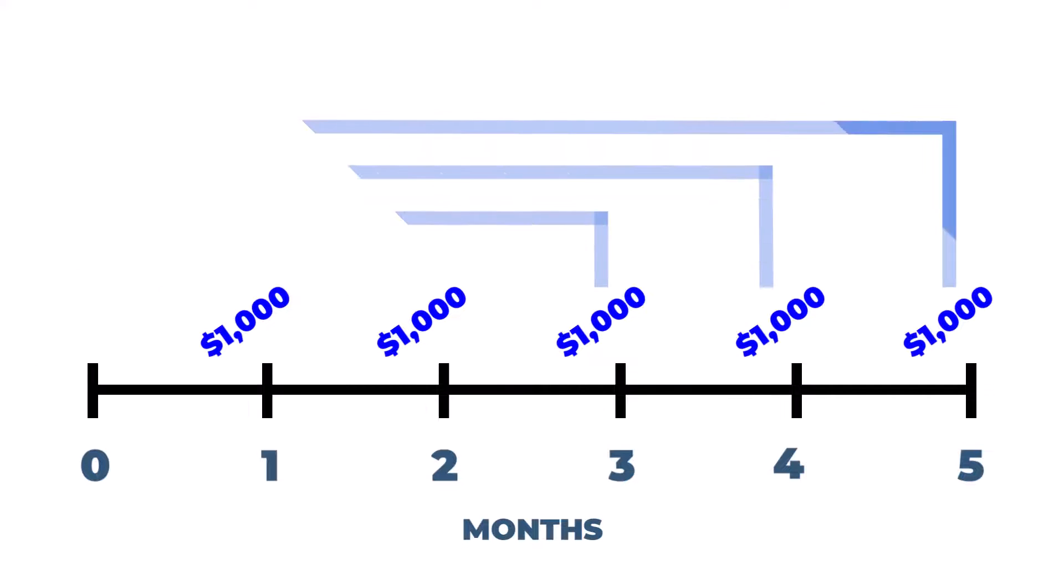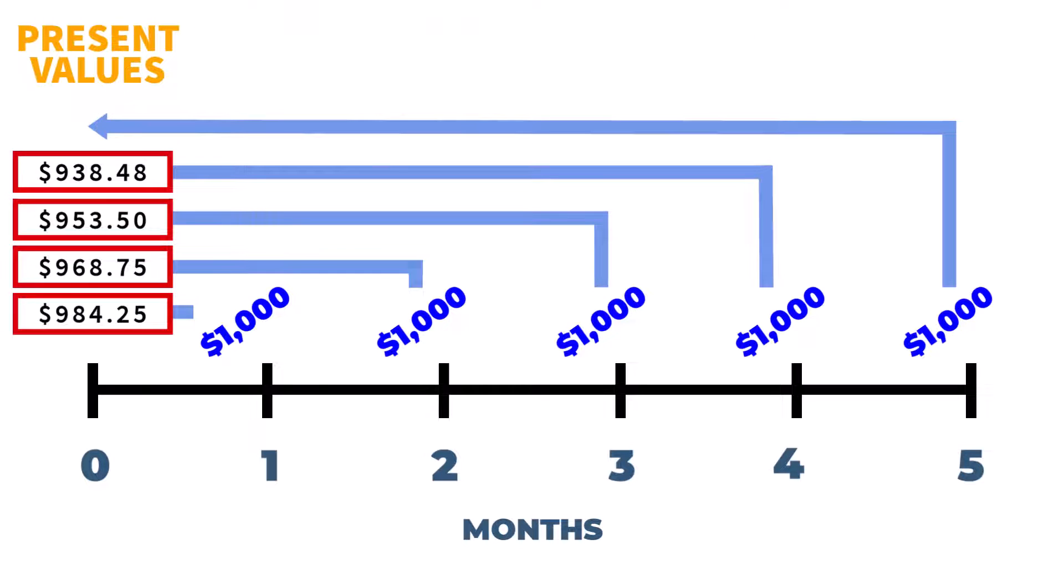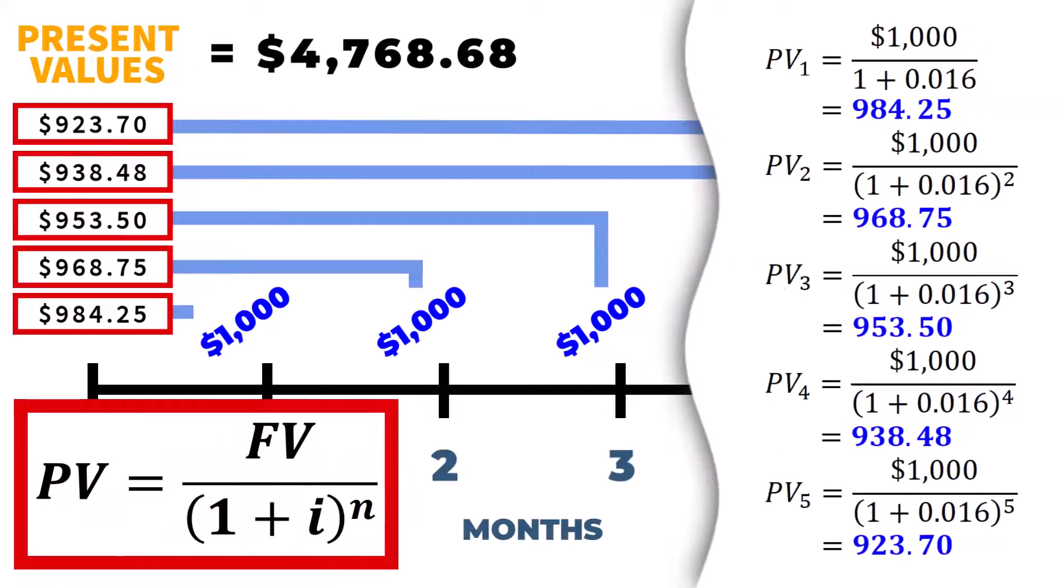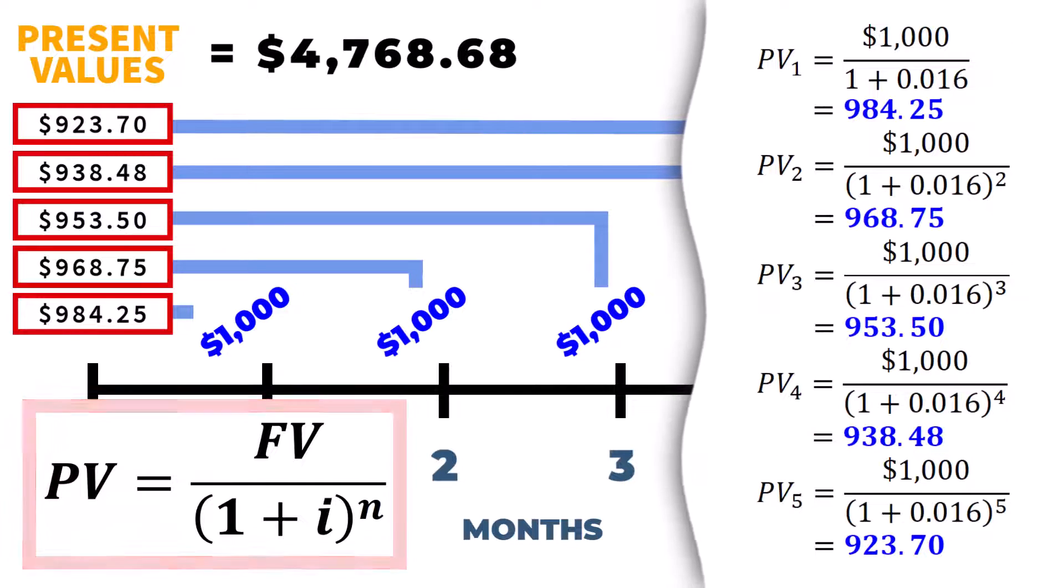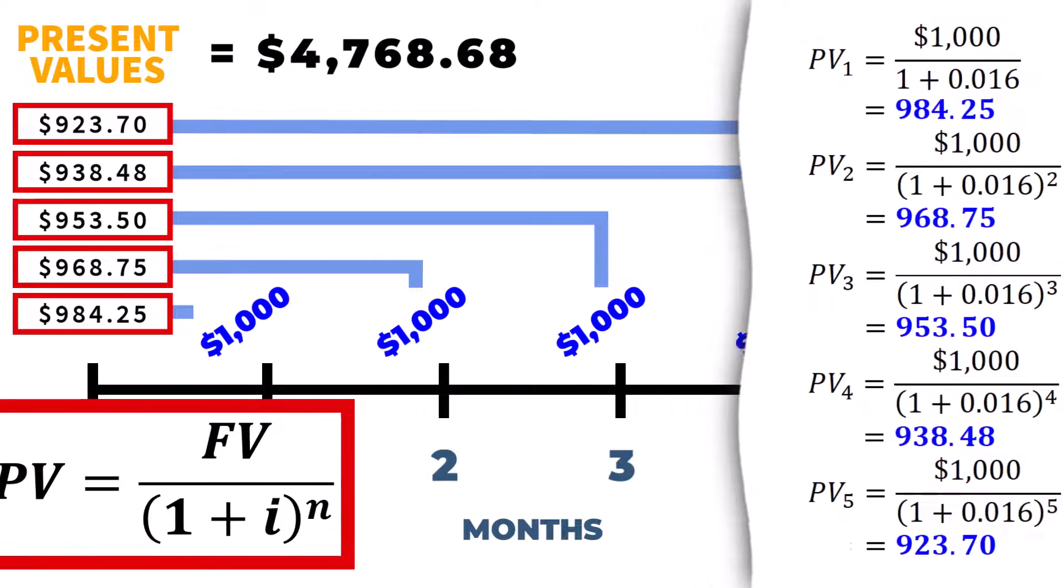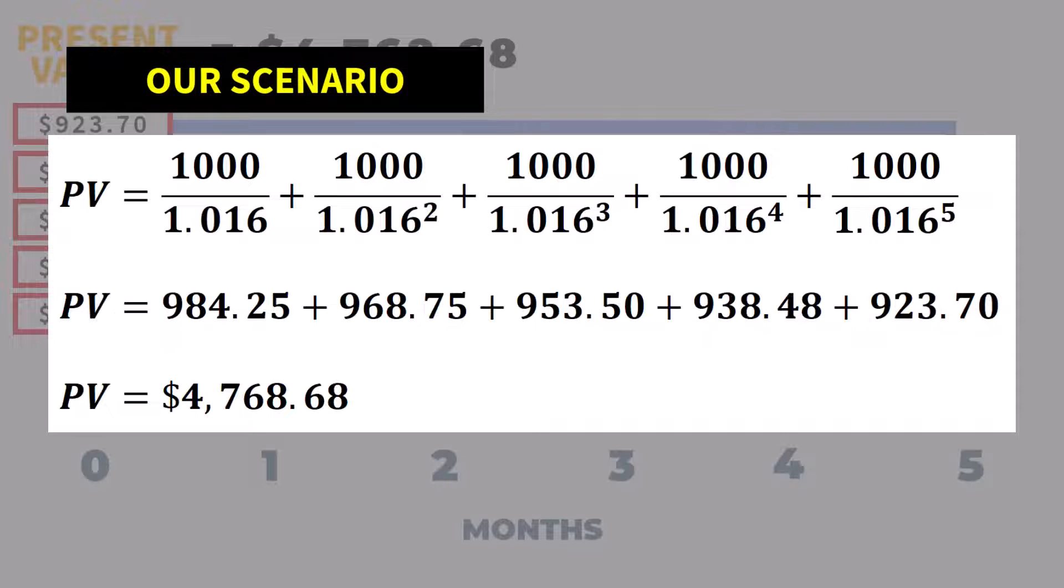The present value of these payments is found by adding up the present values of each of the cash flows taken one at a time. This is done by discounting each future payment using the future value formula manipulated for PV. So to compute the present value of the annuity, we just add up the terms to get the following equation.